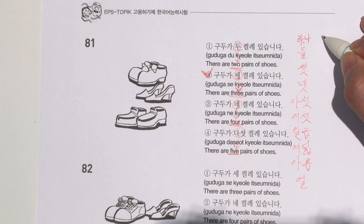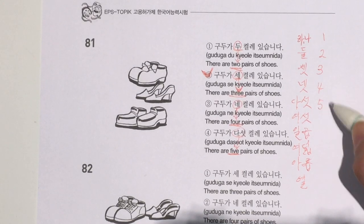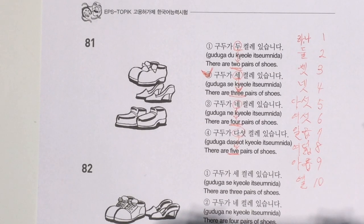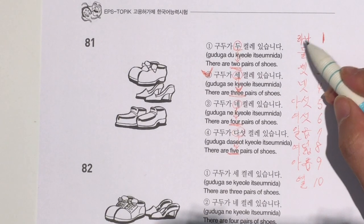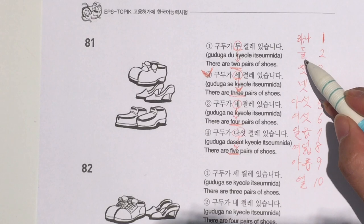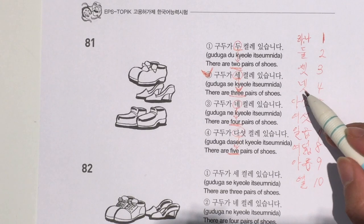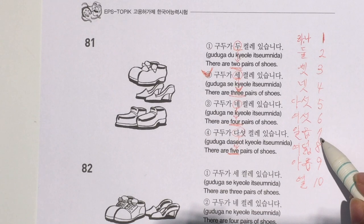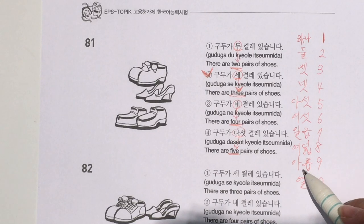하나 means one, 둘 means two, 셋 means three, 넷 means four, 다섯 means five, 여섯 means six, 일곱 means seven, 여덟 means eight, 아홉 means nine, and 열 means ten. We also have one more way to say numbers.